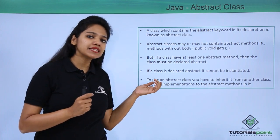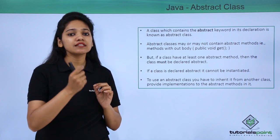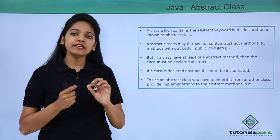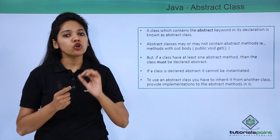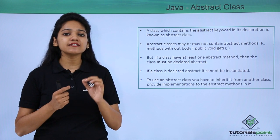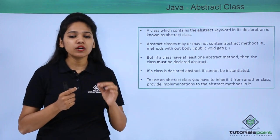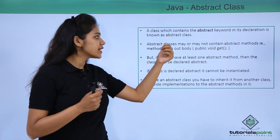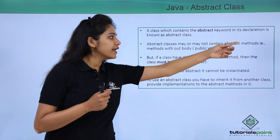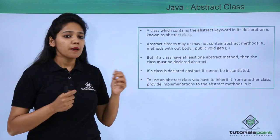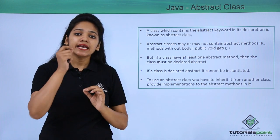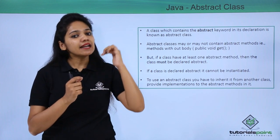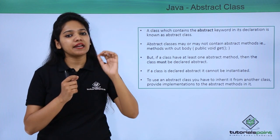An abstract class can include any abstract methods or non-abstract methods — that is, a method with the abstract keyword or a normal method. An abstract class may or may not contain any abstract methods. But if a class consists of even one abstract method, then that class must be declared as abstract.